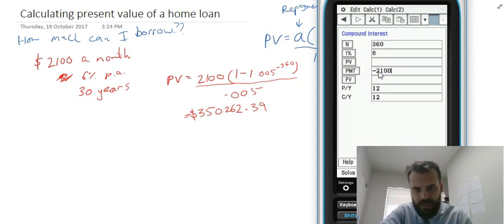Payments, minus 2,100, payments coming out of my pocket, so that's a negative. Future value, the hope is that in 30 years I will have paid this all off, so the future value of a home loan is 0.